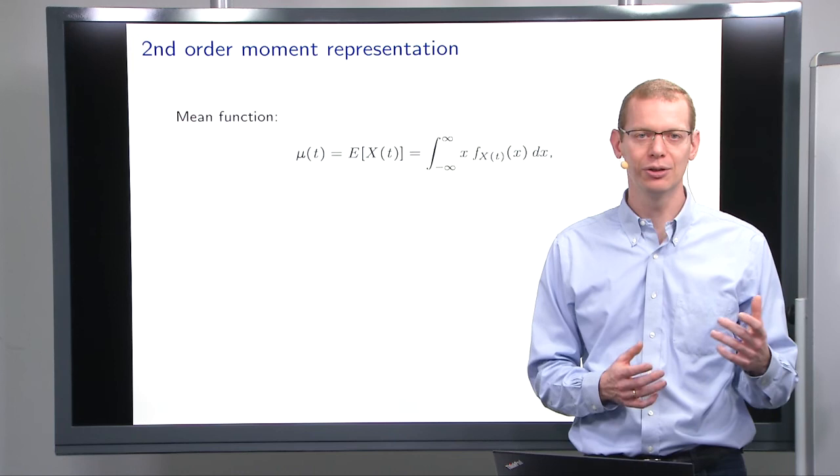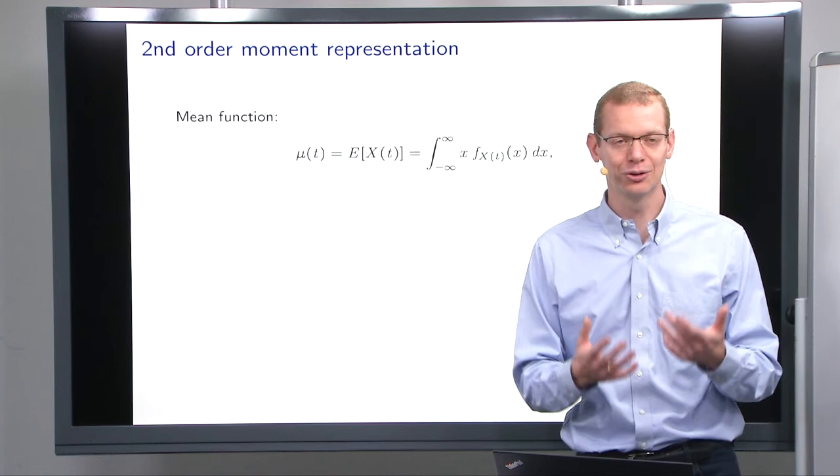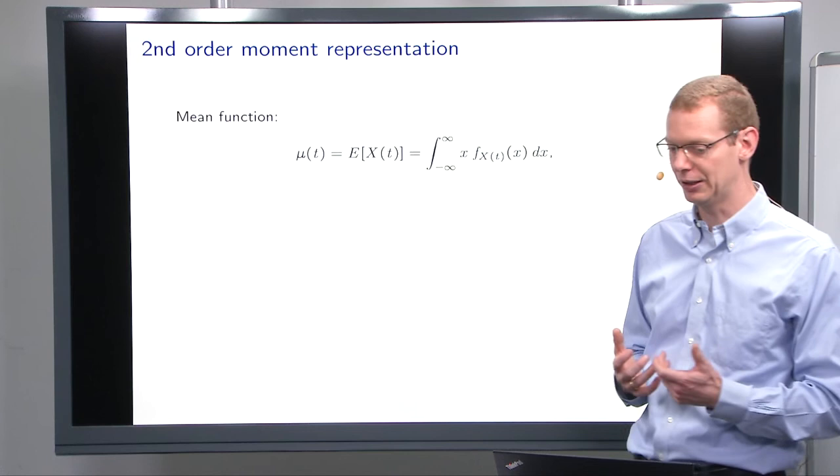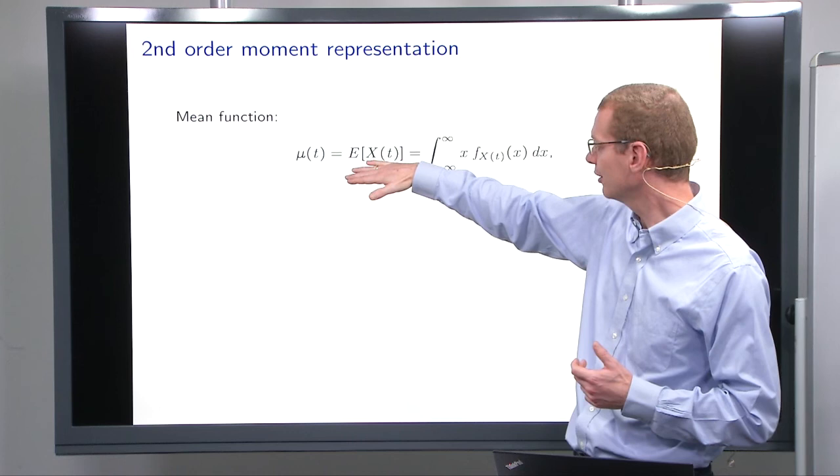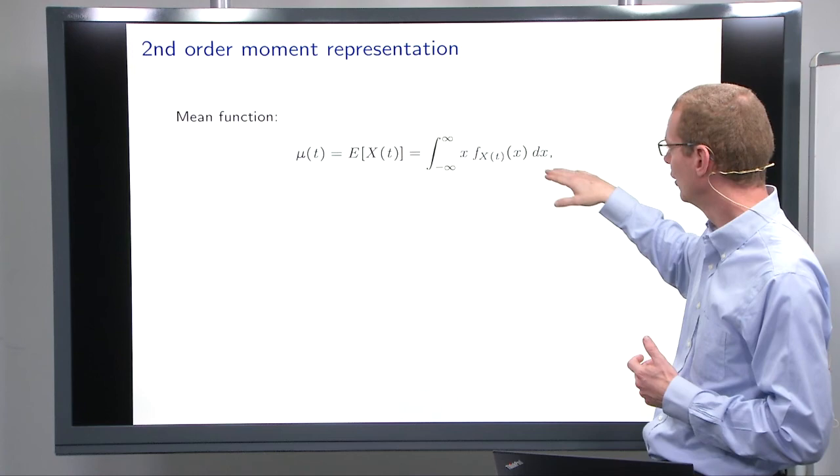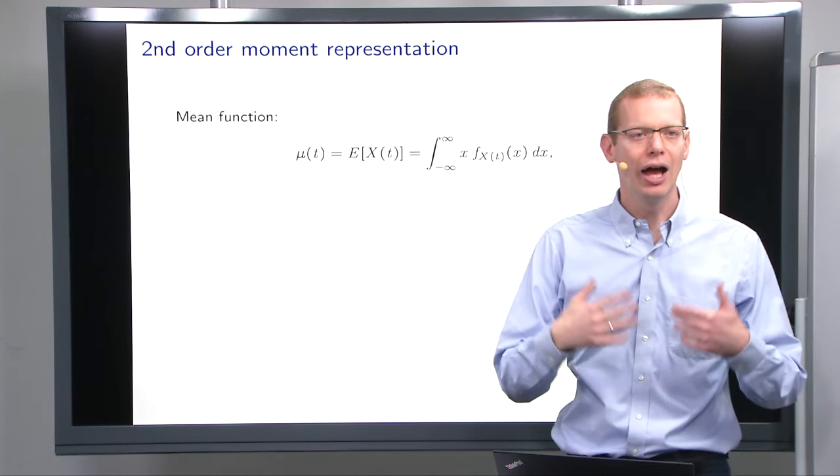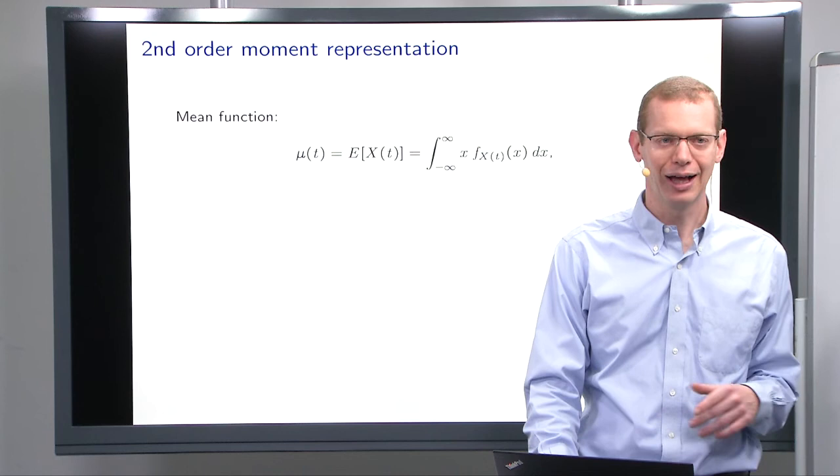In practice, as mentioned earlier, we will mostly look at things that come from the normal distribution, which also means that we are good to go, and we have all the information that we need if we have the second order moment representation in place. So we will look at the mean value, as in the expected value. And that is just as we've seen it before. For a particular point in time, we have a density, we have a random variable, and so on. We just have to move on. Everything is pretty much as it has been always.